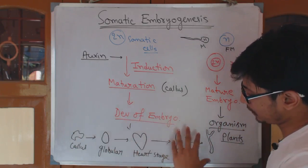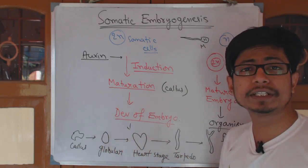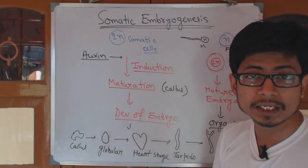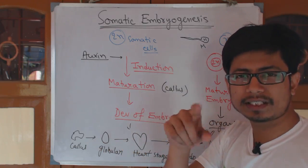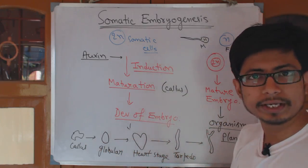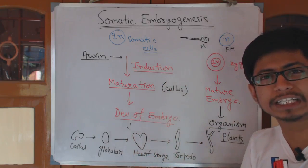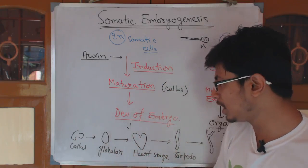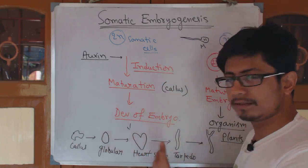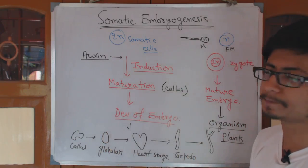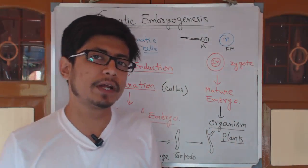At any of these stages we can pause development and convert the embryo into an artificial seed. To preserve it for future use, the embryo is coated in a calcium salt coating, which helps retain moisture content inside and allows it to be stored for a long period. When needed, these artificial seeds can be placed into natural conditions and will give us the plant.